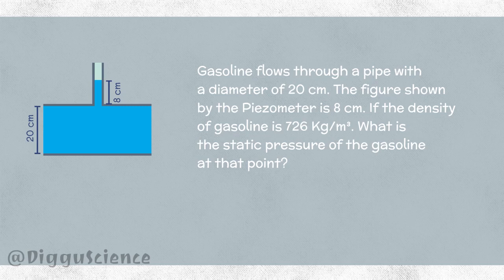Gasoline flows through a pipe with a diameter of 20 centimeters. The figure shown by the piezometer is 8 centimeters. If the density of gasoline is 726 kilograms per cubic meter, what is the static pressure of the gasoline at that point?